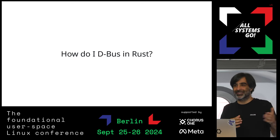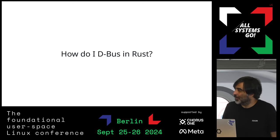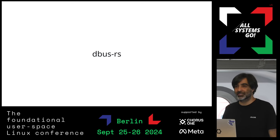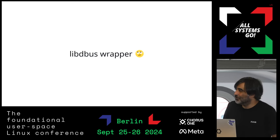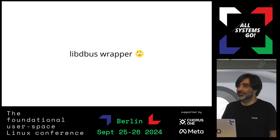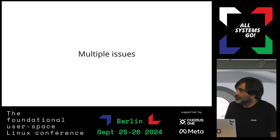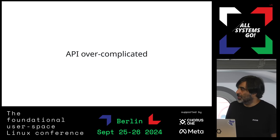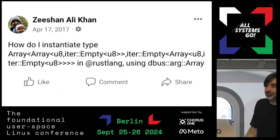If I want to oxidize GeoClue, which is a DBus service, I first need a way to do DBus in Rust. I thought there must be a crate for it, and there was — dbus-rs — which everyone was using and everyone was hating. It's a wrapper around libdbus, which is a notoriously bad C library; it's the reference implementation but it's bad. The API was very complicated, and since I was new to Rust at that point, it was a big hurdle.